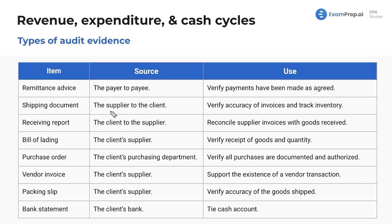If I buy some inventory as the client — say I'm ABC company and I buy goods from a supplier to then sell to my customers — the supplier will send me a shipping document. The auditor can use this to verify the accuracy of invoices and to track inventory. The company itself, including its internal audit division and accountants, also uses this to reconcile and verify amounts.